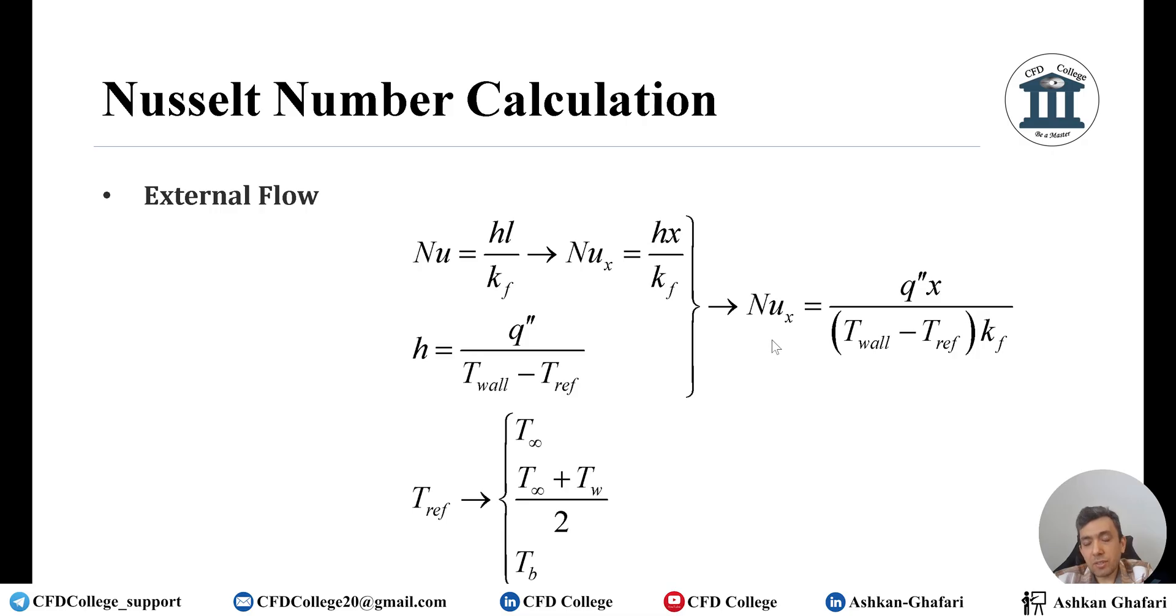So to calculate the Nusselt number in this example, flow over a plate, we need to have the heat flux of the wall at each section, at each point. We need to have temperature of the wall and we need to think about reference temperature. I want to use the first assumption and we need conductivity of the fluid. Now by this explanation let's go and calculate the Nusselt number here from our simulation and then we can compare it with the theoretical formula or correlations that we have.